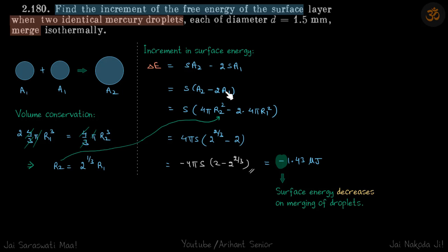We can write a2 and a1 in terms of r2 and r1, and then we can relate r2 and r1 by volume conservation, which gives r2 is 2 power 1 by 3 times r1.